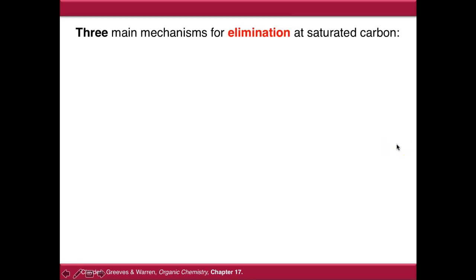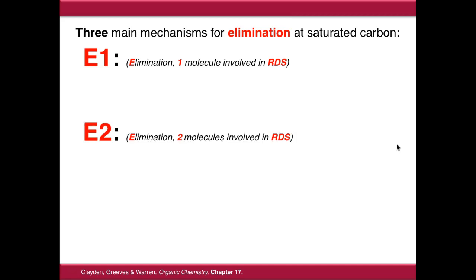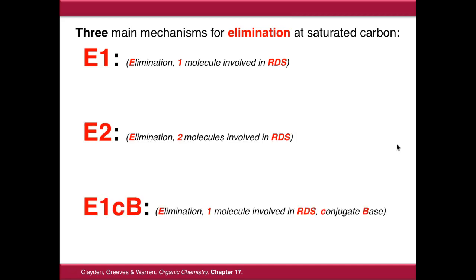There are three main mechanisms by which elimination occurs. The first one is called E1, which is elimination unimolecular. The second one is E2, elimination bimolecular. And the third one is E1CB, which is elimination unimolecular conjugate base.